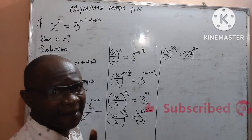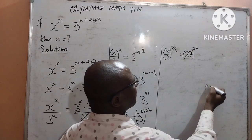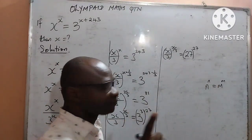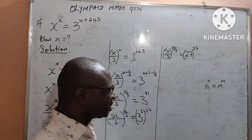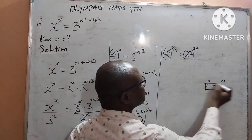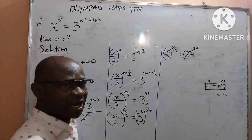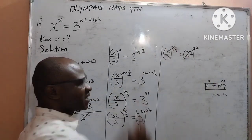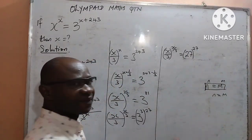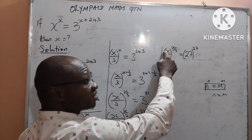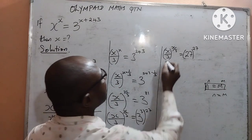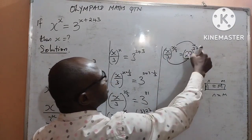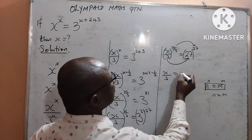What we do next is apply a law in indices that says if n to the power of n equals n to the power of n — the base and the power are the same — then the bases are automatically equal, so n equals n. I apply that here because my n on the left is x over 3, and the power is also x over 3. And on the right, my n is 27, and the power is also 27. We conclude that x over 3, which is the base on the left, is equal to the base on the right, which is 27. So x over 3 equals 27.